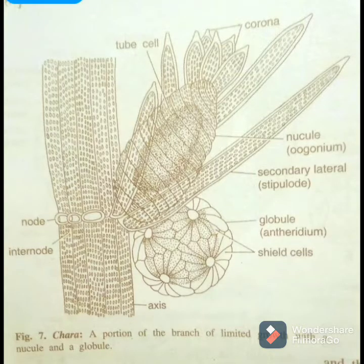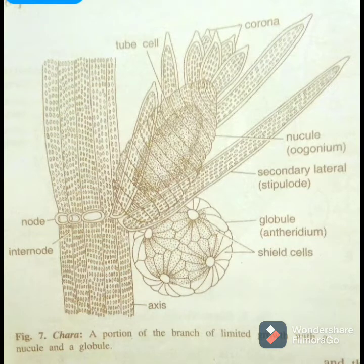The structure of the globule or the antheridium is not as simple as it looks — it is very complicated inside compared to other algal species. The globule or antheridium is spherical in shape, large, macroscopic, and is a conspicuously red or yellow structure.